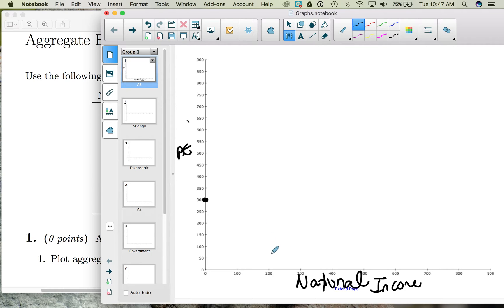Then when income is 100, aggregate expenditures are 350. When national income is 200, aggregate expenditures are 400. And we can continue to plot the points all the way until national income is 800 and aggregate expenditures are 700. So we can connect our line here.